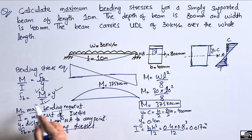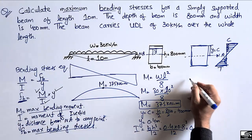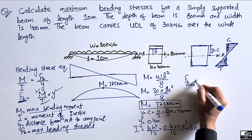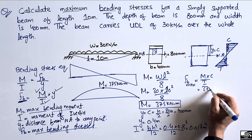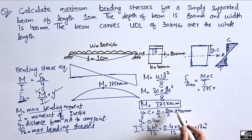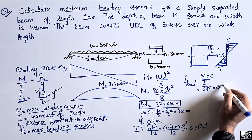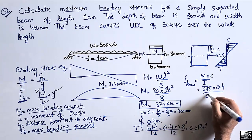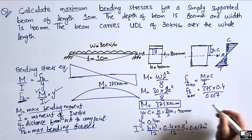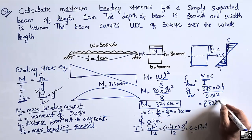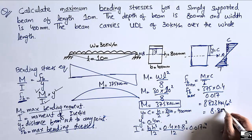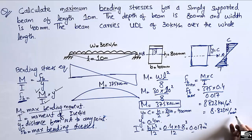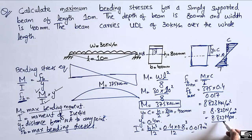After finding all values, we substitute into the bending stress formula. The maximum bending stress fb = M·c / I = 375 × 0.4 / 0.017, which gives 8,823 kN/m², or equivalently 8.823 kN/mm² (MPa). So the maximum bending stress in this beam is 8.823 MPa.